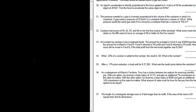Let's do number 57. It says, the length of a rectangular storage room is four feet longer than its width. If the area of the room is 60 square feet, find its dimensions.